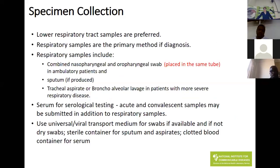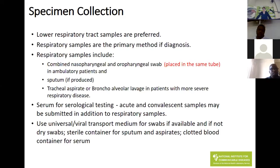Lower respiratory tract samples are preferred. If the patient has pneumonia, we need a lower respiratory tract sample to avoid missing the diagnosis. For mild illness, take a combined nasopharyngeal and oropharyngeal swab — please put both in the same tube to avoid wasting two PCR kits. If sputum or other lower respiratory samples are available, you should collect them. Serum is not recommended as a diagnostic test, though we are taking blood from confirmed cases to understand immune response evolution.